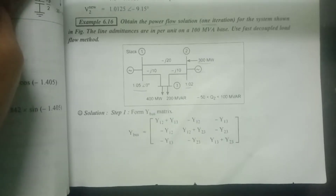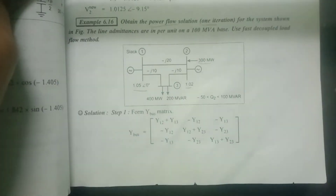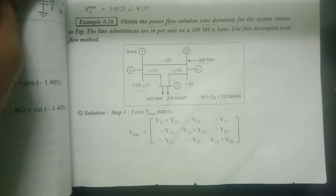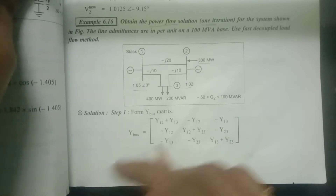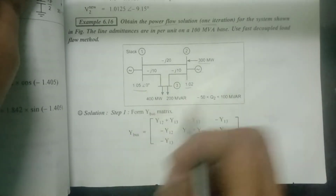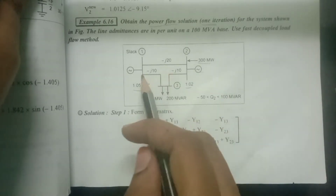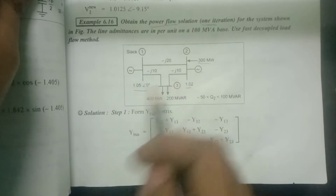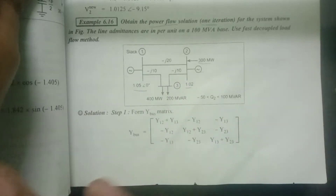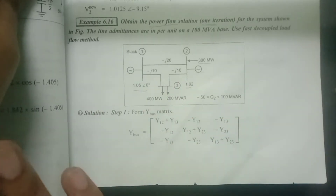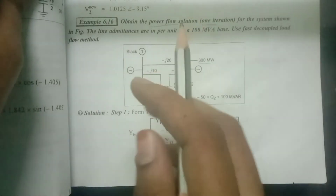Friends, in this video we will talk about Fast Decoupled Method problems. We have a 3-bus system: 1st bus, 2nd, and 3rd bus. We have to calculate power flow and complete one iteration.